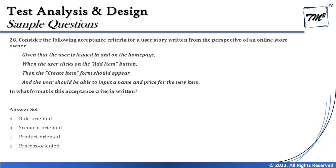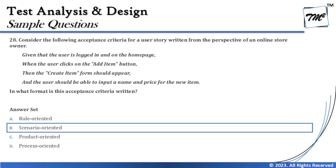The options are: A — rule oriented, B — scenario oriented, C — product oriented, D — process oriented. Product and process oriented are not valid ways to write acceptance criteria. Scenario and rule oriented are the two formats used. Since this acceptance criteria uses the given/when/then format, the right answer is B — scenario oriented. Rule oriented makes use of bulleted or numbered lists. Sometimes questions are straightforward but narrated in a way that makes you overthink.